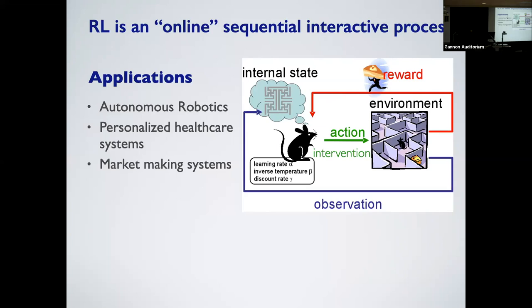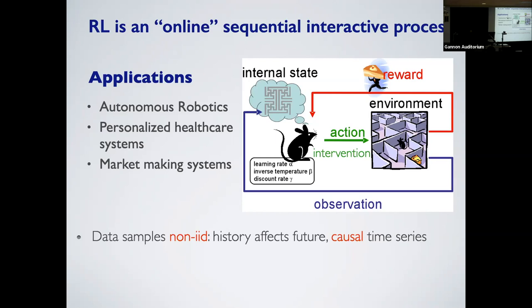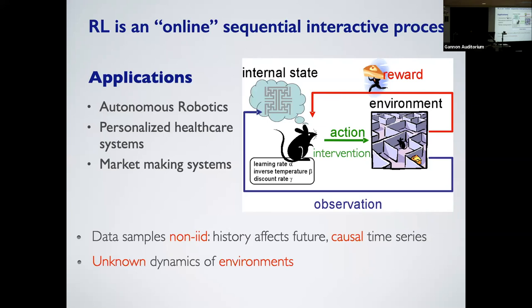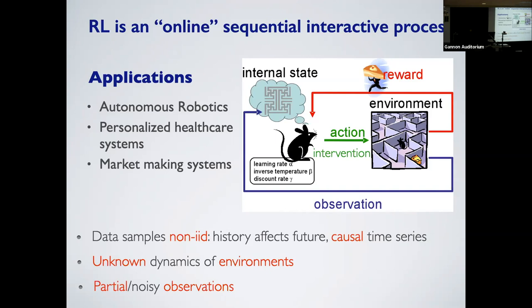In RL, to maximize the reward, the agent makes observations from the environment and then selects an action, or intervention. This intervention takes the agent to a different state. The trajectory of the agent's exploration in history, which is a causal time series, affects the future — so the history affects the future and is no longer IID. Also, the transition dynamics of the environment is unknown to the agent, which is the difficult part of the learning. What's more challenging is that only partial or noisy observations are available to the agent.